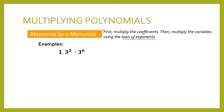For example, we have 3 squared times 3 raised to 6. To find the product, we use product of a power. In product of a power, we simply copy our base, which is 3, and then add our exponents, which is 2 and 6. So 2 plus 6 is equal to 8. That's why the final answer is 3 raised to 8.